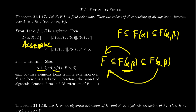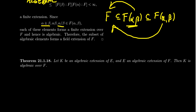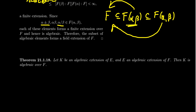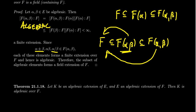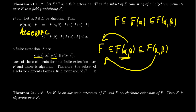The second theorem: let K be an algebraic extension over E, and let E be an algebraic extension over F. Then K is an algebraic extension over F. I'll state this theorem but leave the proof to the viewer. The properties we just proved will be very useful as we define the notion of an algebraically closed field in the next video.